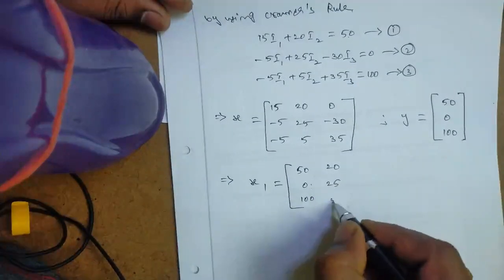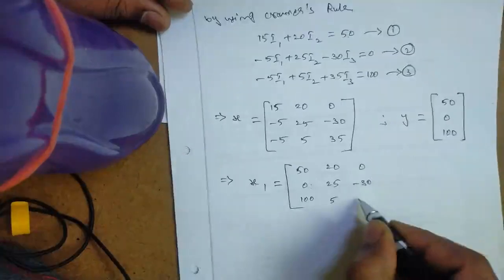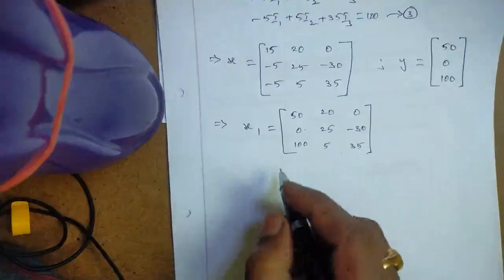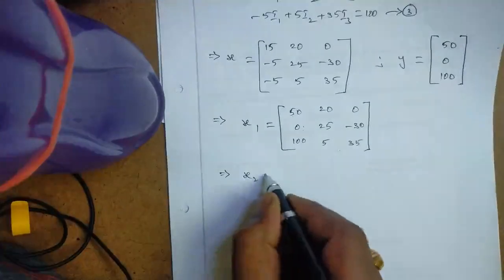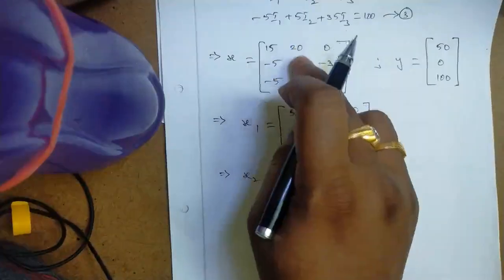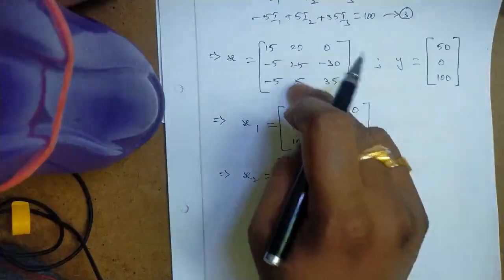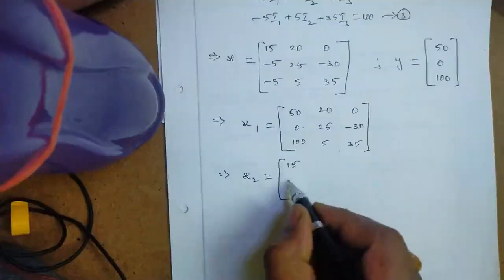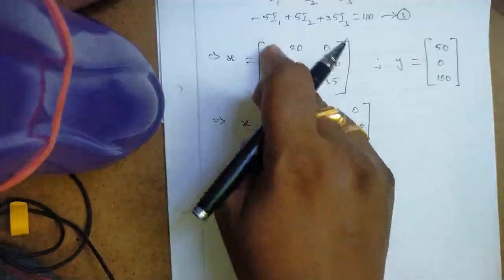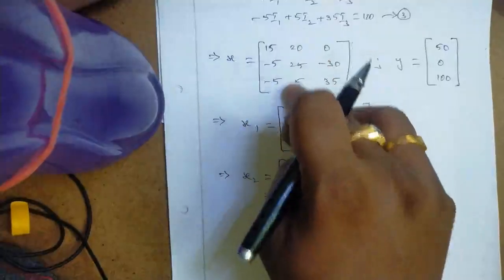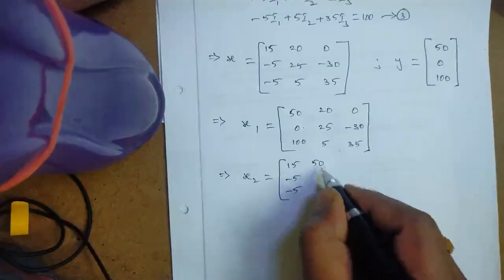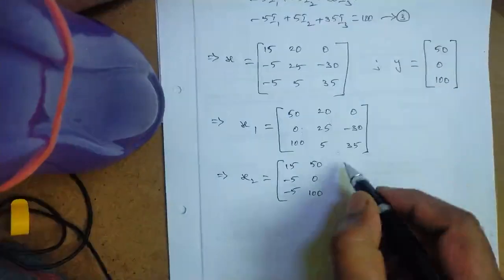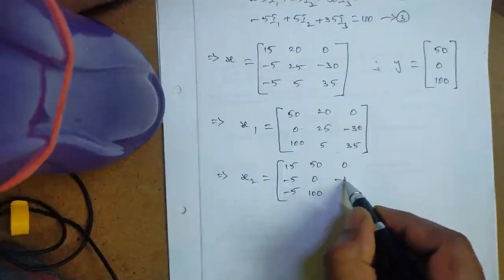Similarly, matrix X2 is formed by replacing the second column of matrix X with the constant matrix Y. The first column remains as is: 15, minus 5, minus 5. The second column becomes 50, 0, 100. The third column remains as is: 0, minus 30, 35.